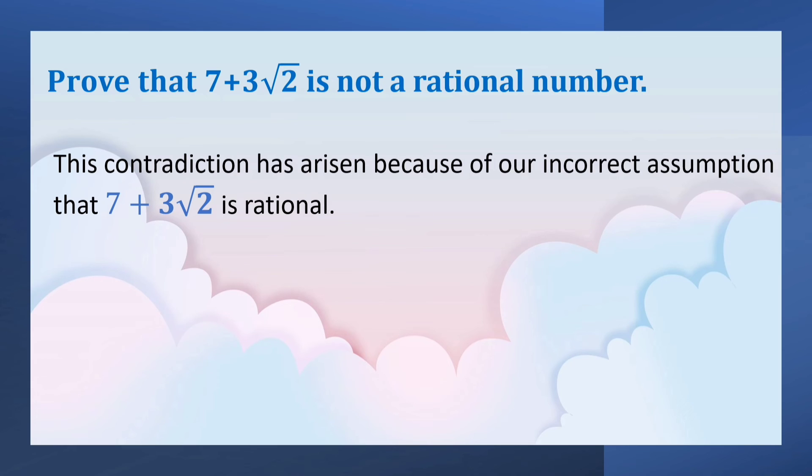This contradiction has arisen because of our incorrect assumption that 7 plus 3 root 2 is rational. So, we conclude that 7 plus 3 root 2 is not a rational number. It is an irrational number. Hence proved.